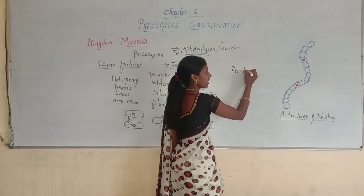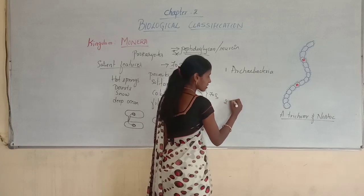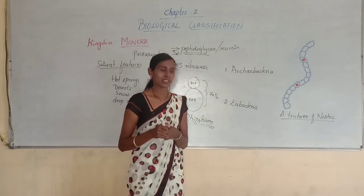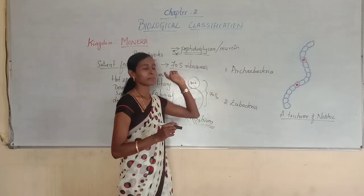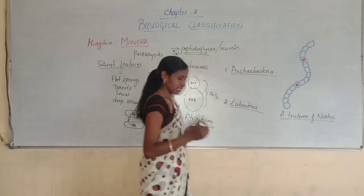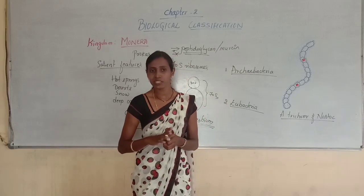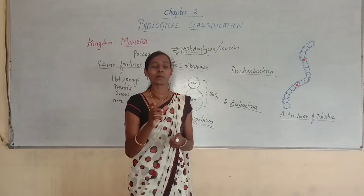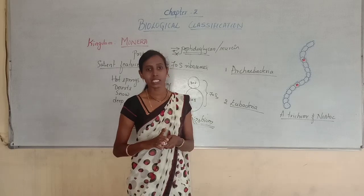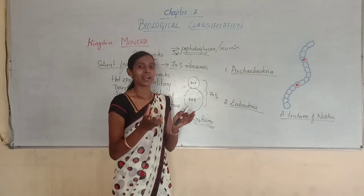Kingdom Monera involves two subgroups: Archaebacteria and Eubacteria. Archaebacteria are the most ancient and most primitive organisms evolved on Earth — the first-formed ancient prokaryotes. They are special bacteria because they can survive in special or harsh habitats like hot springs, deserts, snow, deep inside the ocean, and even extreme salt conditions.